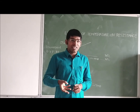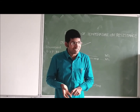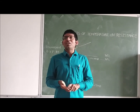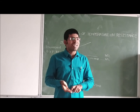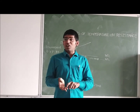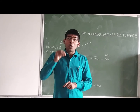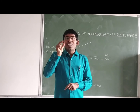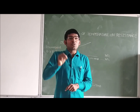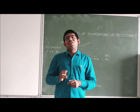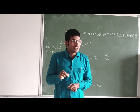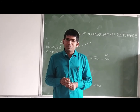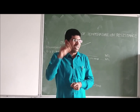So, which materials exhibit a negative temperature coefficient? Insulators, semiconductors, and electrolytes. Which materials exhibit a positive temperature coefficient? Metals and alloys. Between metals and alloys, metals exhibit a higher positive temperature coefficient. The symbol used to indicate the temperature coefficient of resistance is alpha naught. Alpha naught equals RT minus R naught, divided by R naught into T, where T is the rise or fall in temperature.